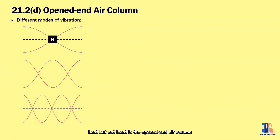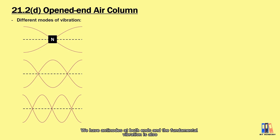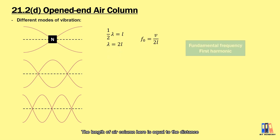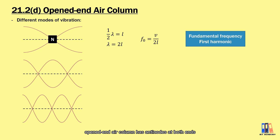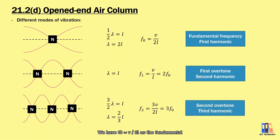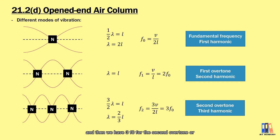The last type is the open-end air column, where both ends of the tube are open. We have antinodes at both ends, and the fundamental vibration has one node in the middle of the air column. The length of the air column equals the distance between two consecutive antinodes, which is half of the wavelength. The analysis is similar to the stretched string — the difference is that the open-end air column has antinodes at both ends. The next two modes have two and three nodes. We have f₀ = V/2L as the fundamental or first harmonic, 2f₀ as the first overtone or second harmonic, and 3f₀ as the second overtone or third harmonic.